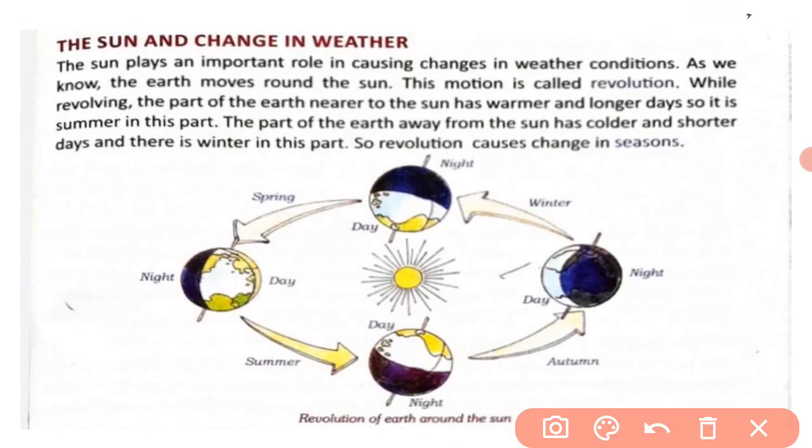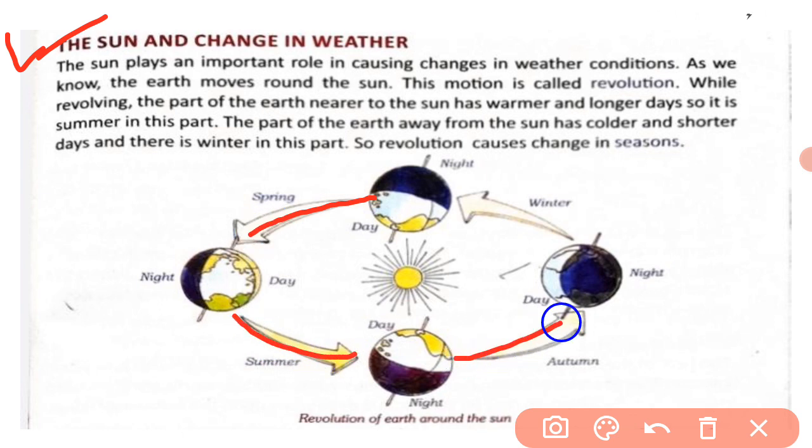First we will discuss about the sun and change in weather. The sun plays an important role in causing changes in weather conditions. As we know, the earth moves around the sun — this motion is called revolution. Earth sun ke ird-gird move karta hai, aur earth ki is movement ko kaha jata hai revolution.